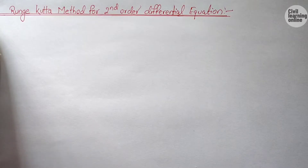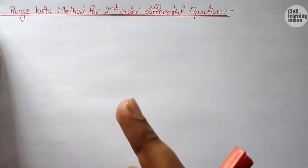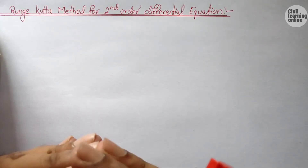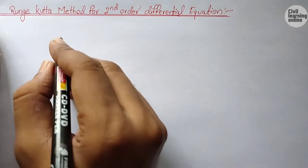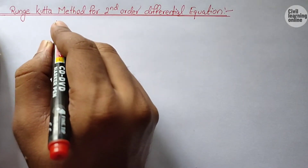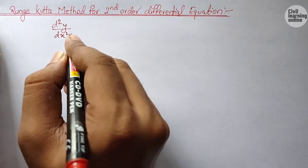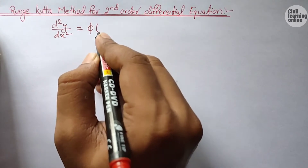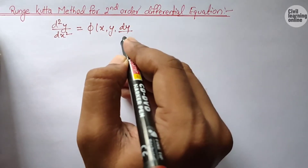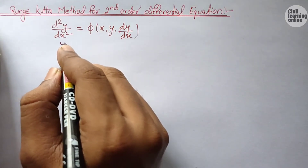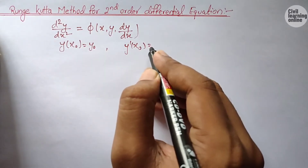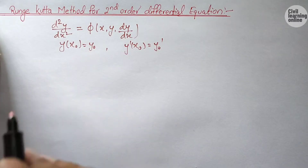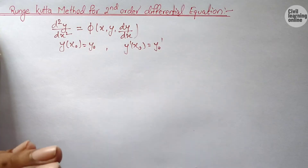Let us first go through the basics. We will discuss the type of equation which we will be given for the second order differential equation, some conditions, and then I will add the solution of an example. The second order differential equation means d²y/dx² which will be given in the form equal to φ(x, y, dy/dx). We will be provided with conditions: y(x₀) = y₀ and y'(x₀) = y₀'.